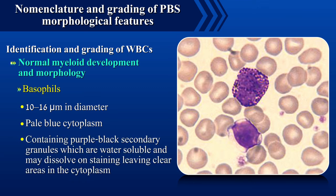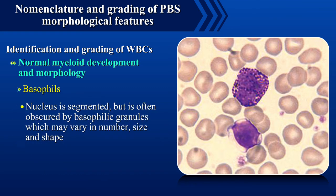Basophils are 10 to 16 microns in diameter with pale blue cytoplasm containing purple-black secondary granules which are water soluble and may dissolve on staining, leaving clear areas in the cytoplasm. The nucleus is segmented but is often obscured by basophilic granules which may vary in number, size and shape.